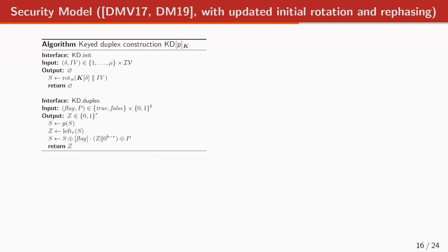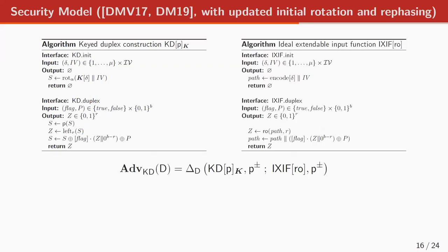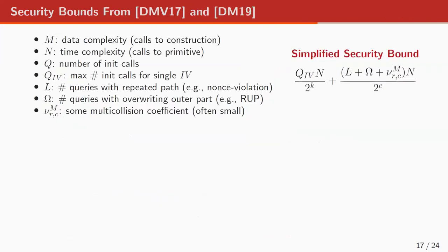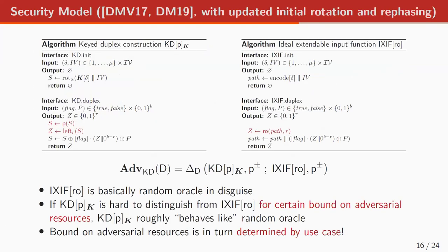Because I'm running out of time, I'll skip to the security model. The bottom line is that the duplex is secure if it behaves like the ICSIF — the ideal extendable input function, which is an ideal duplex. The idea is that if you have two different duplex evaluations with the same path to a certain point but then a different fork, every time you have a new path you get a random output. But if you have a repeated path, you get a repeated output. The ICSIF is basically a random oracle in disguise that captures this behavior.